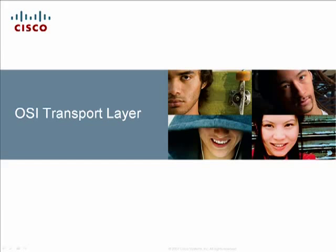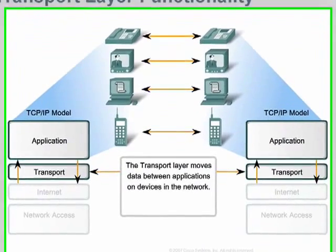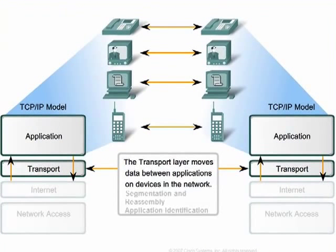The transport layer of the OSI model is responsible for the overall end-to-end transfer of application data. This video presents the transport layer mechanisms, services, and protocols that support this end-to-end connectivity. The primary responsibilities of the transport layer include tracking the individual communication between